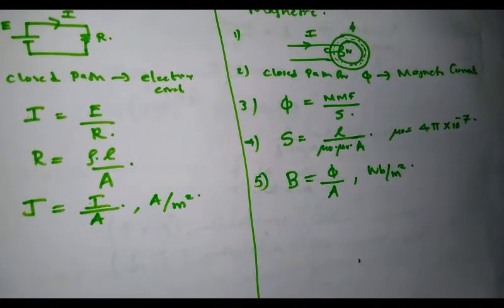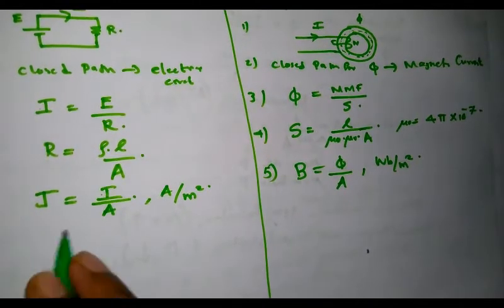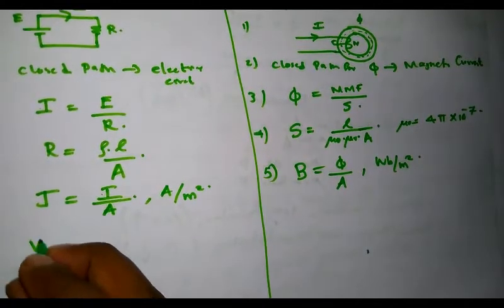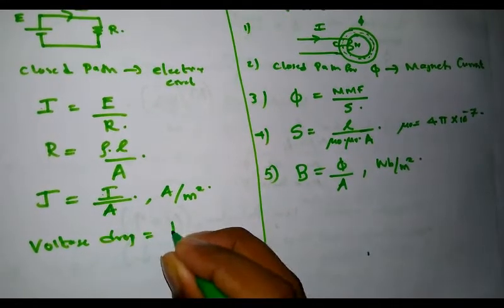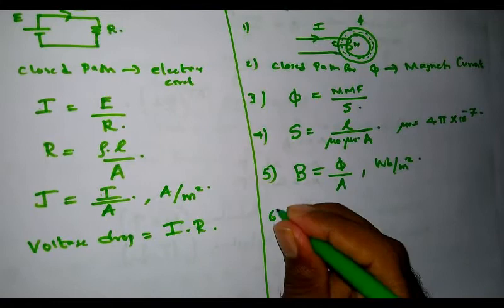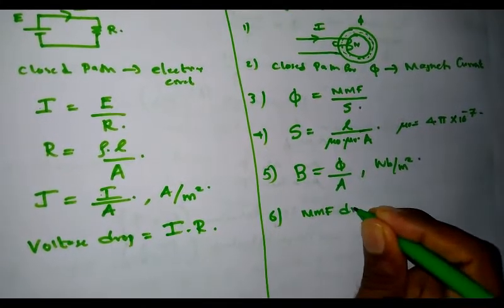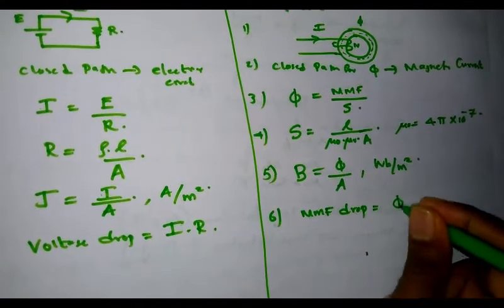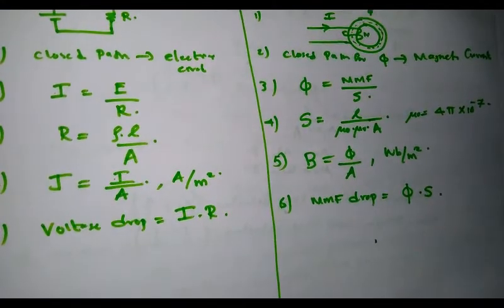In an electric circuit, voltage drop is given by I times R, according to Ohm's law. Similarly, in a magnetic circuit, MMF drop is given by phi times S, that is flux times reluctance.